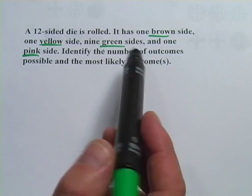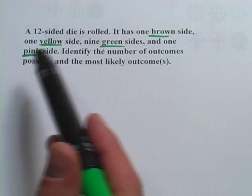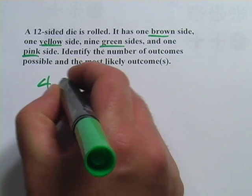So when you think about it, you can really only get brown, yellow, green, or pink. So those are four outcomes. And that's all that's really possible.